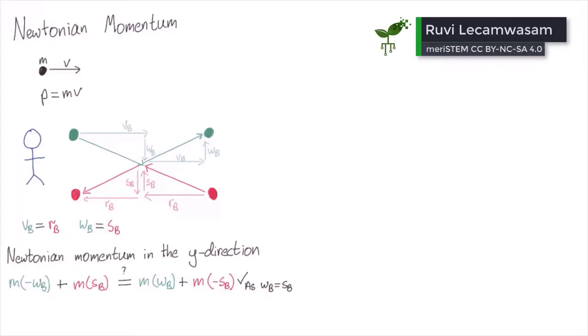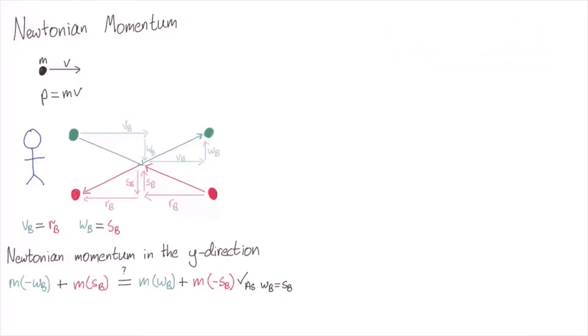From what we know about relativity, there is no special inertial reference frame. So we don't just want momentum to be conserved in one frame, we want it to be conserved in all frames.